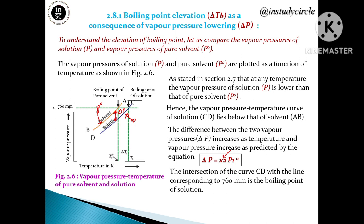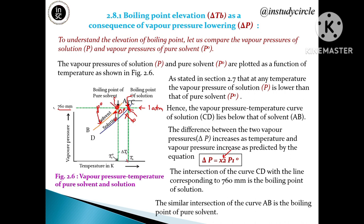The intersection of curve CD with the horizontal line corresponding to atmospheric pressure (760 mmHg or 1 atm) gives the boiling point of the solution. When the vapor pressure of the solution equals atmospheric pressure at that intersection point, that temperature is the boiling point of the solution, denoted by Tb.